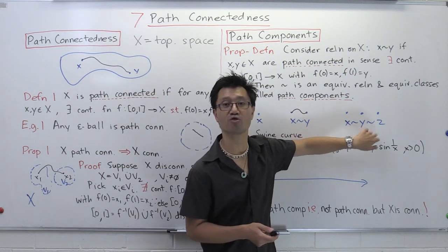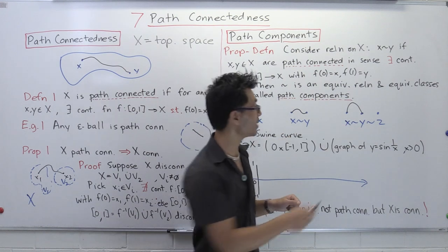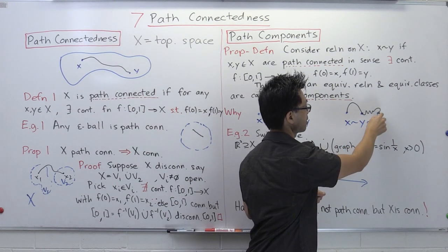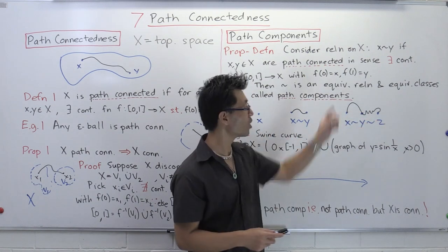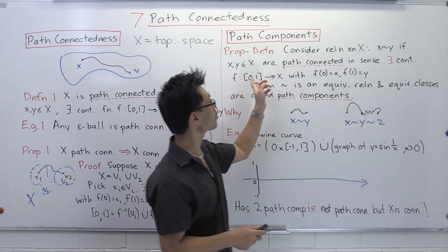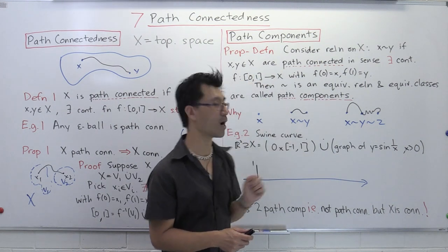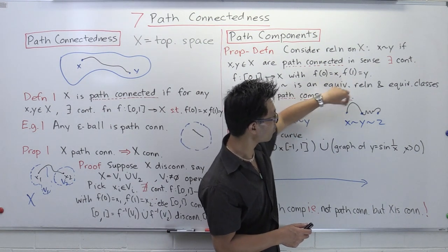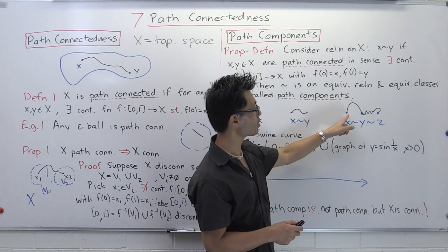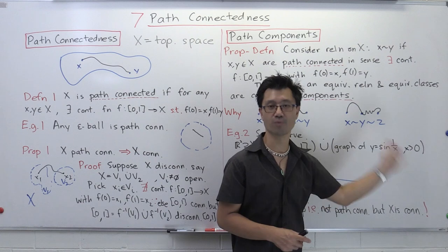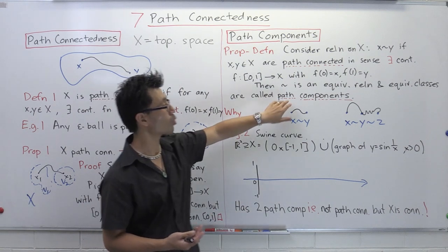For transitivity, suppose x is related to y and y is related to z. We need to show x is related to z. You compose the paths: these paths are trajectories, functions of [0,1]. If you go along the path from x to y at double speed, then continue at double speed from y to z, you get a continuous function from [0,1] starting at x and landing at z, showing x is related to z. This confirms it's an equivalence relation, and we call the equivalence classes path components.